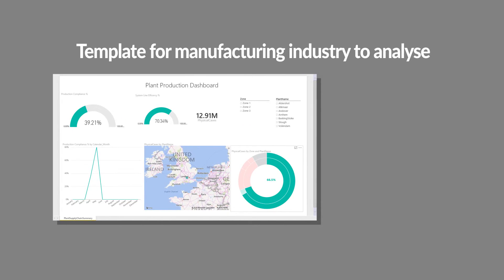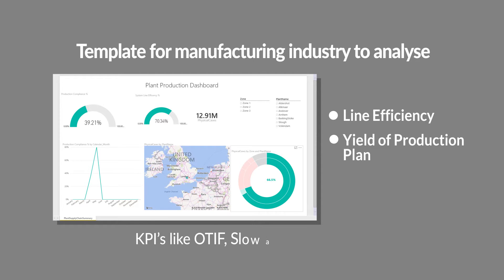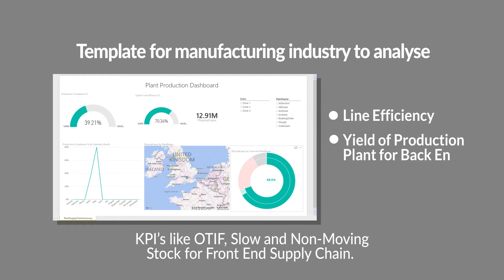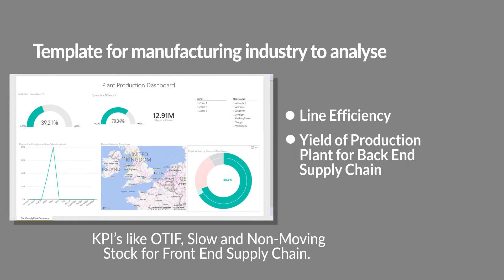A template for the manufacturing industry allows you to analyze line efficiency, yield of production plant, back-end supply chain KPIs like OTIF, slow and non-moving stock for front-end supply chain, and many more.